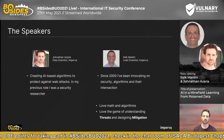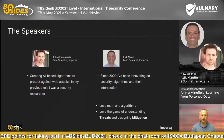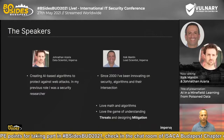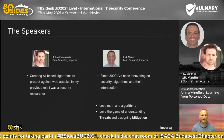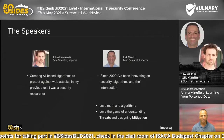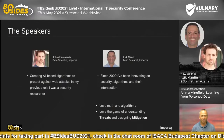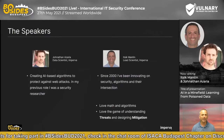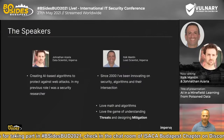I'm Idsik Mantin, lead scientist at Imperva. In the last 21 years, I've been innovating security algorithms and their intersection. I love math, I love algorithms, and I really enjoy the game of understanding threats and designing mitigation.